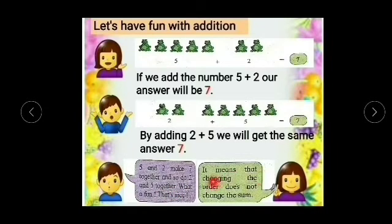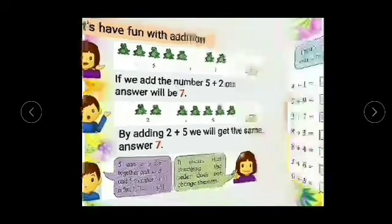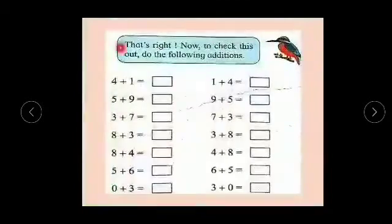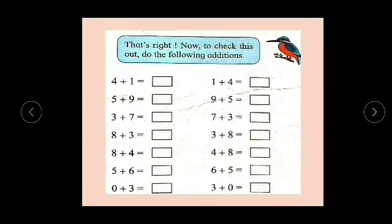It means that changing the order does not change the sum. Sum means answer. So 5 plus 2 is also 7. If we change the order, 2 plus 5, we'll get the same answer: 7. So by changing the order, answer will not change. That's right.